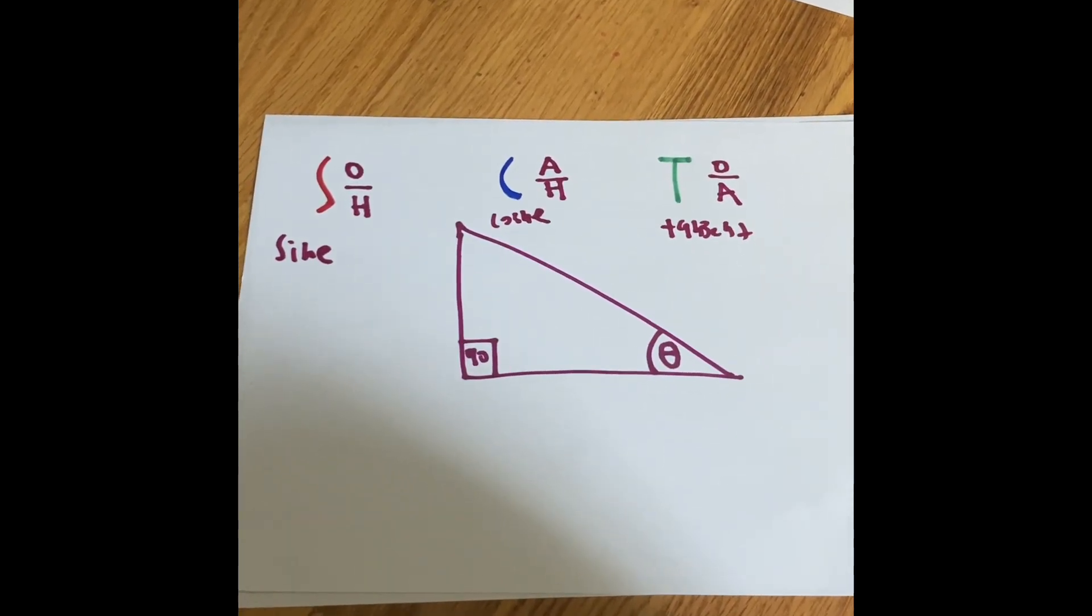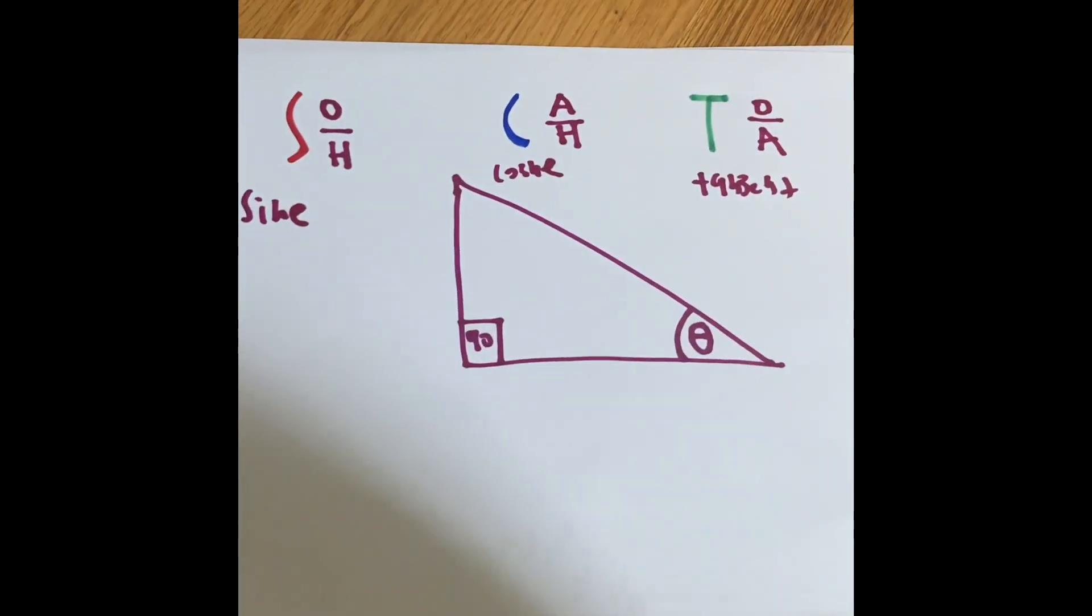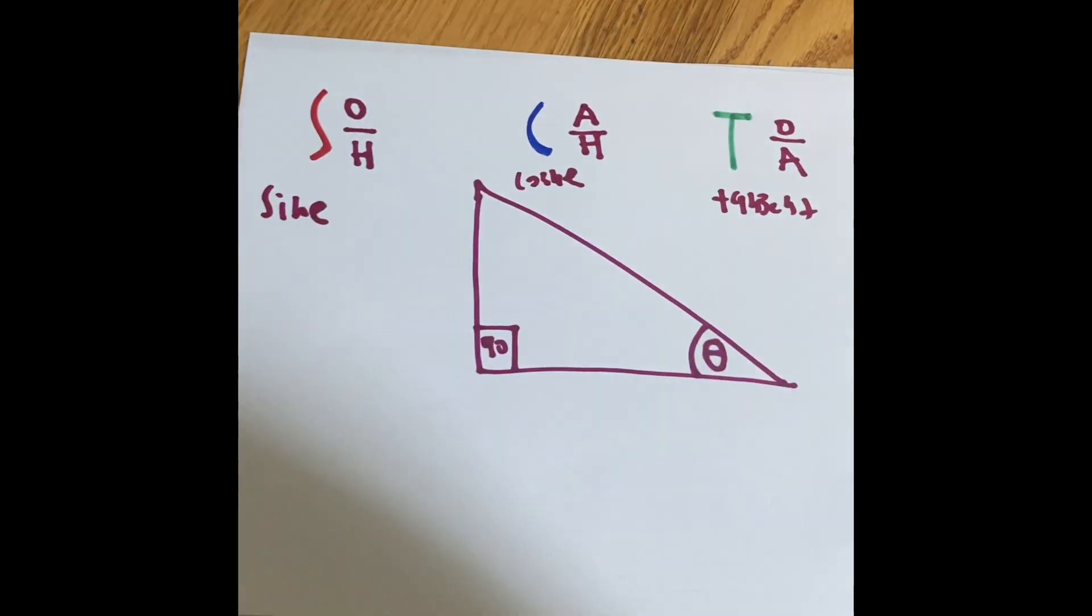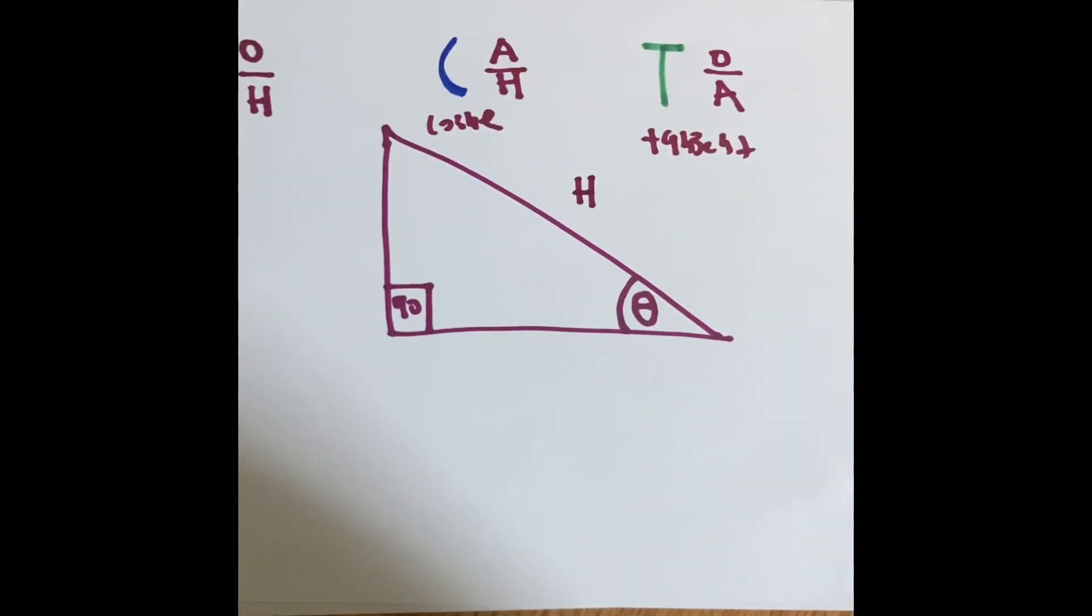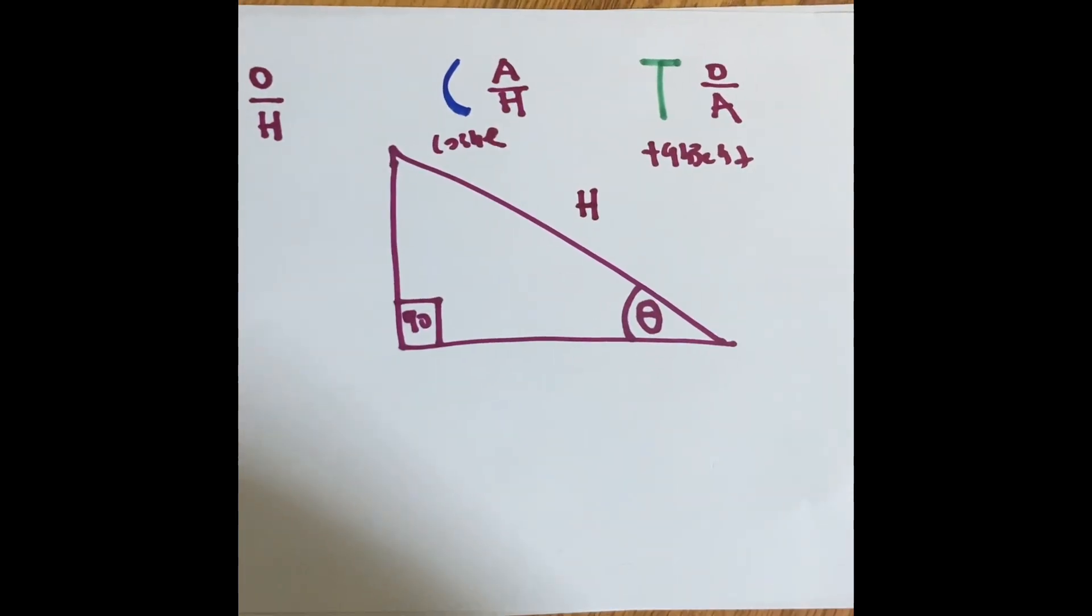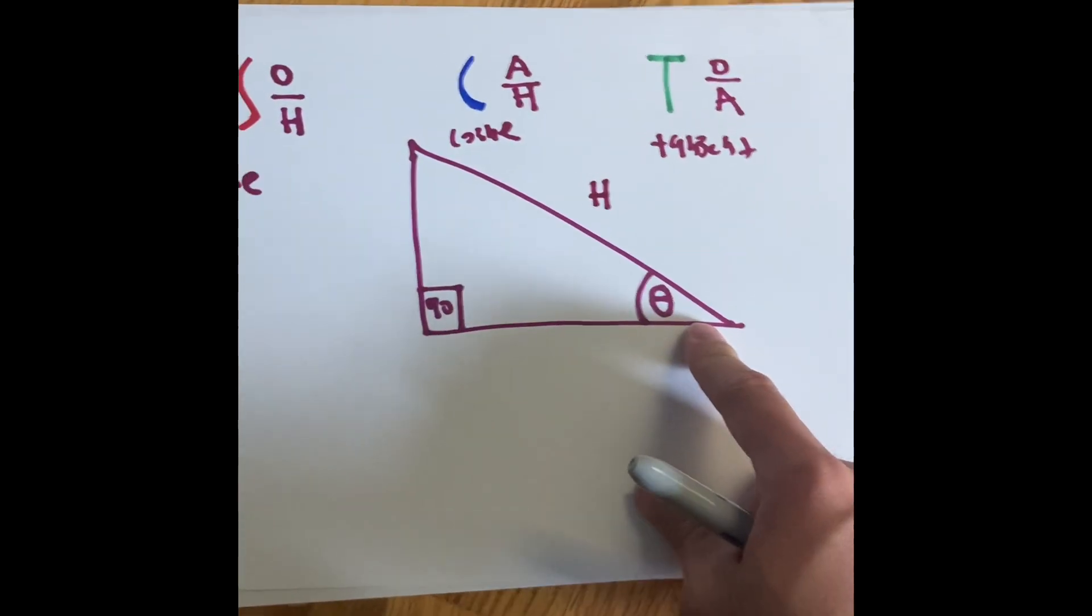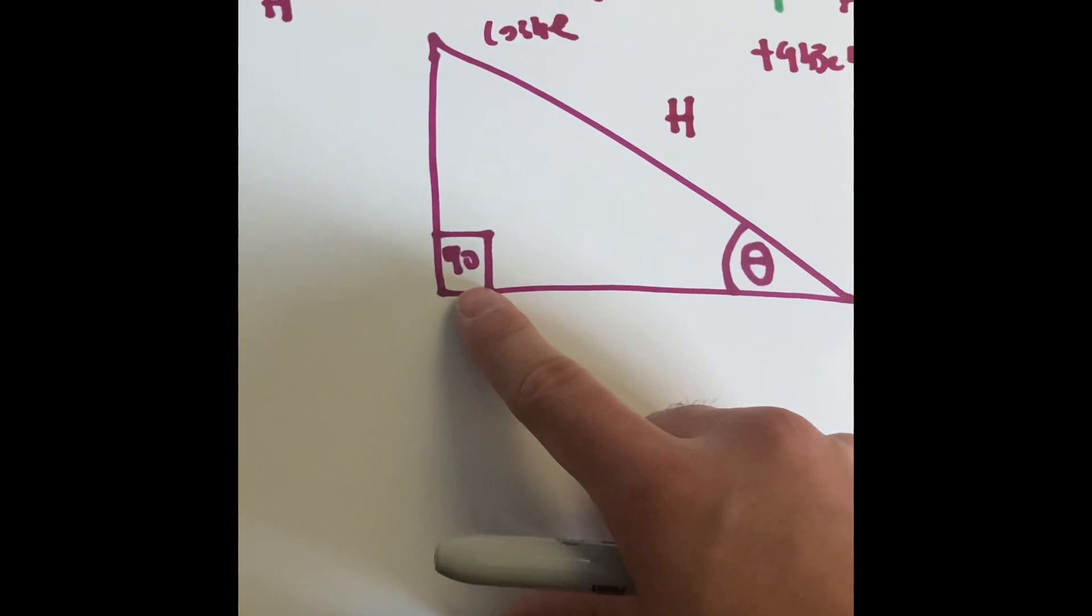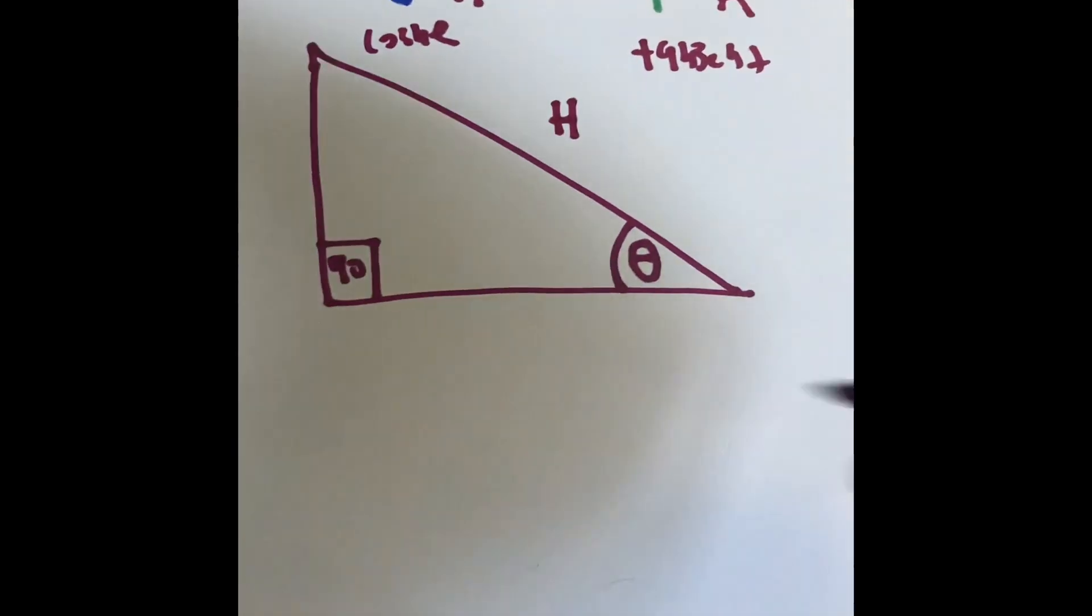Well, we already know that from the Pythagorean theorem, we know that the longest line of a triangle, or the longest segment of a triangle, is going to be the hypotenuse, or the letter H. The adjacent is going to be touching the angle to the hypotenuse, but also to the 90 degree angle, which creates a 90 degree triangle, or a right triangle.